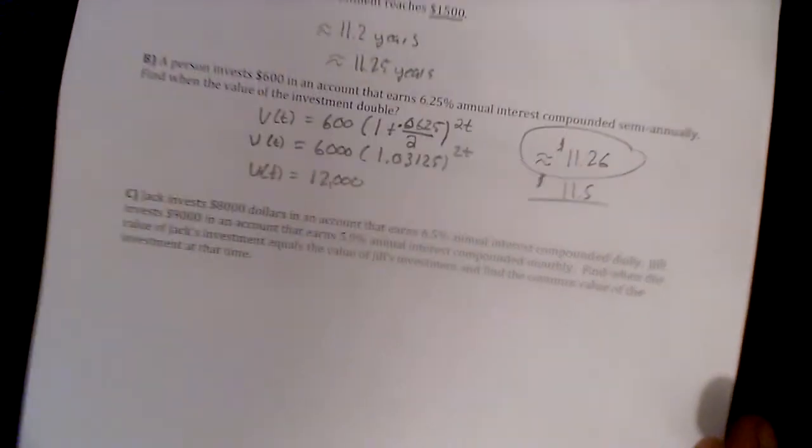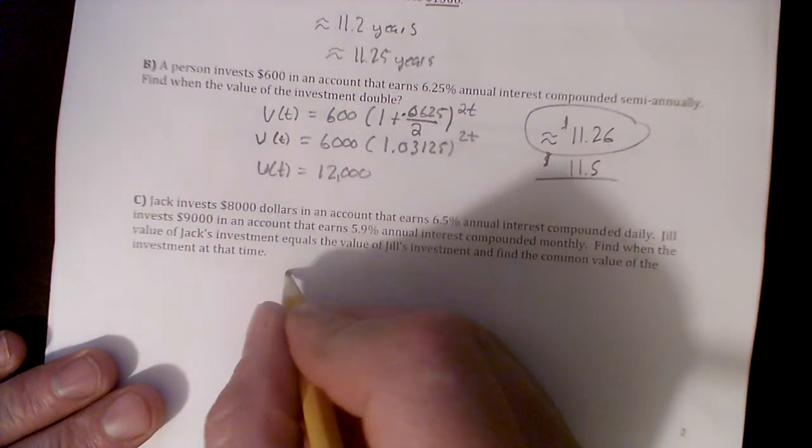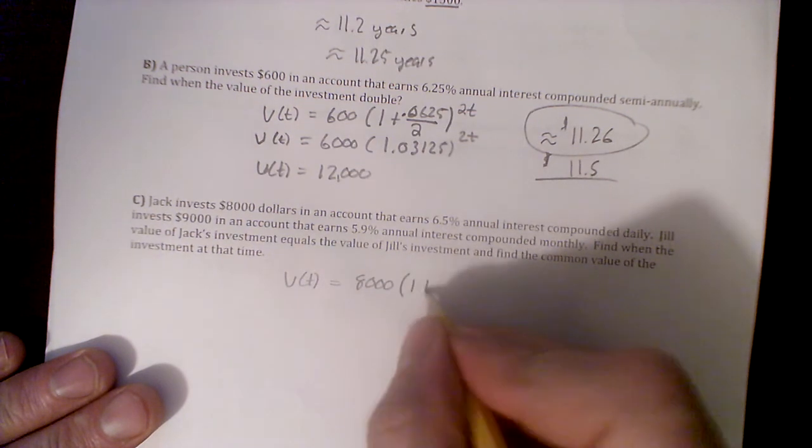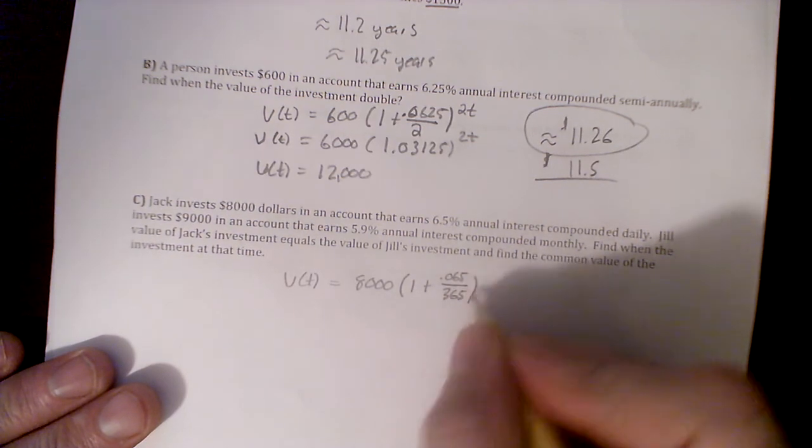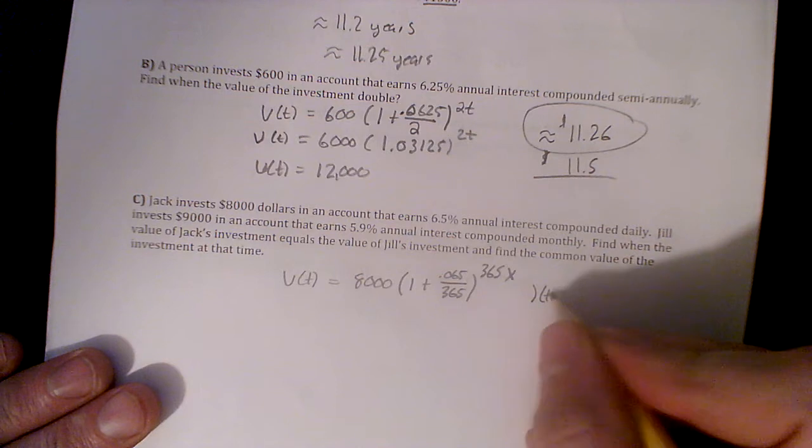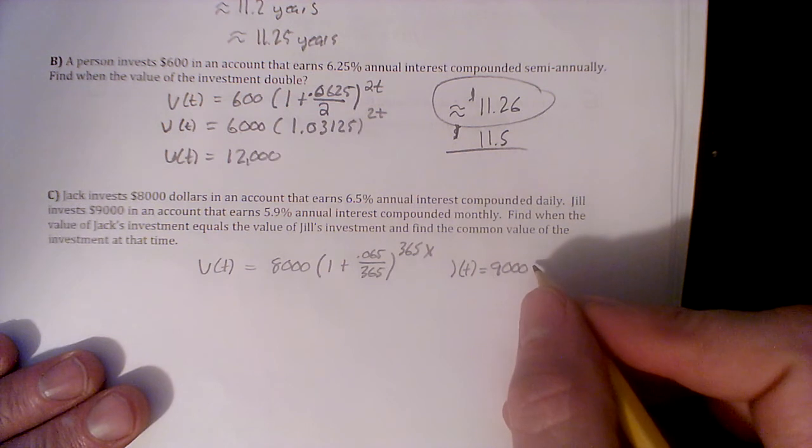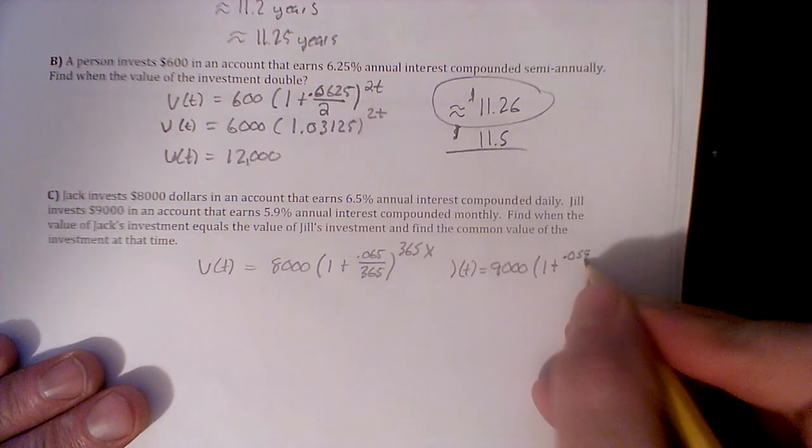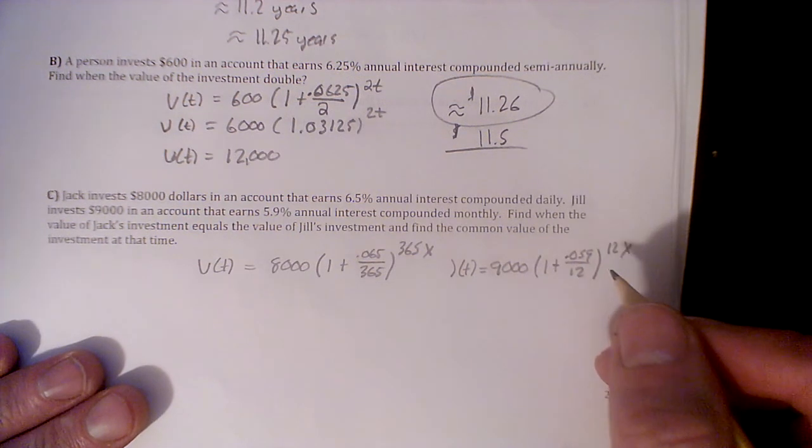Alright, we got one more. Jack, yeah I got a kid named Jack in my second period class. Here we go, so Jack invests $8000 in an account that earns, compounded daily. Oh, I like this already. So here we go, V(t) equals 8000 times 1 plus 0.065 divided by 365 days in a year, 365 times t. Jill, let's go G(t), Jill of t, invested $9000 in an account that does 5.9% monthly, so $9000 times 1 plus 0.059 divided by 12, monthly, so 12x.